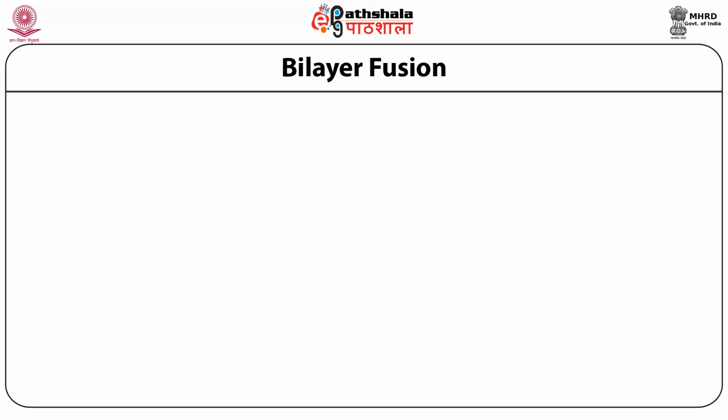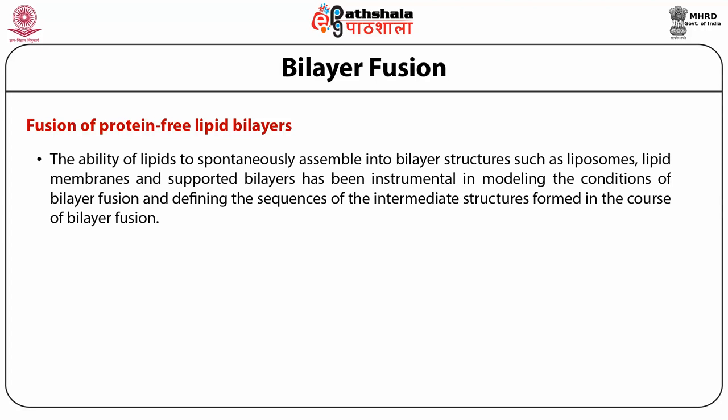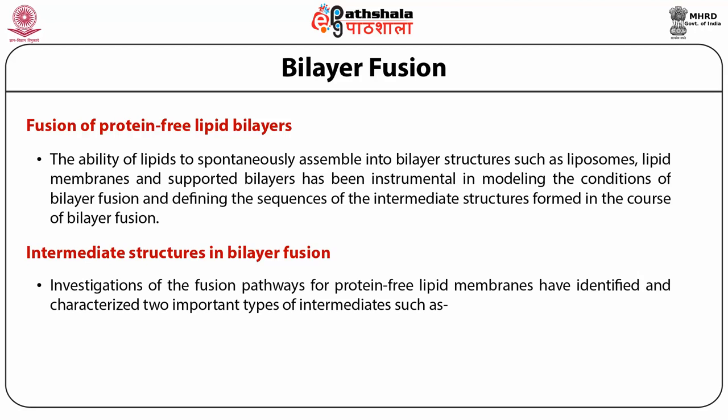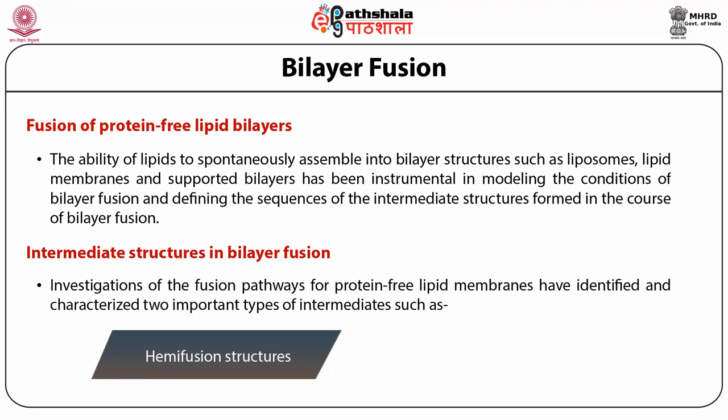There are two types of fusion. In one type, you have fusion of the lipid bilayer which does not involve protein — that is, fusion of protein-free lipid bilayer. The ability of lipids to spontaneously assemble into lipid structures is known as liposomes or lipid membranes. Supported bilayers have been instrumental in modeling the conditions of bilayer fusion and defining the sequence of intermediate structures formed in the course of bilayer fusion. Investigators have identified two important types of intermediates: hemifusion structure formation and fusion pore formation.